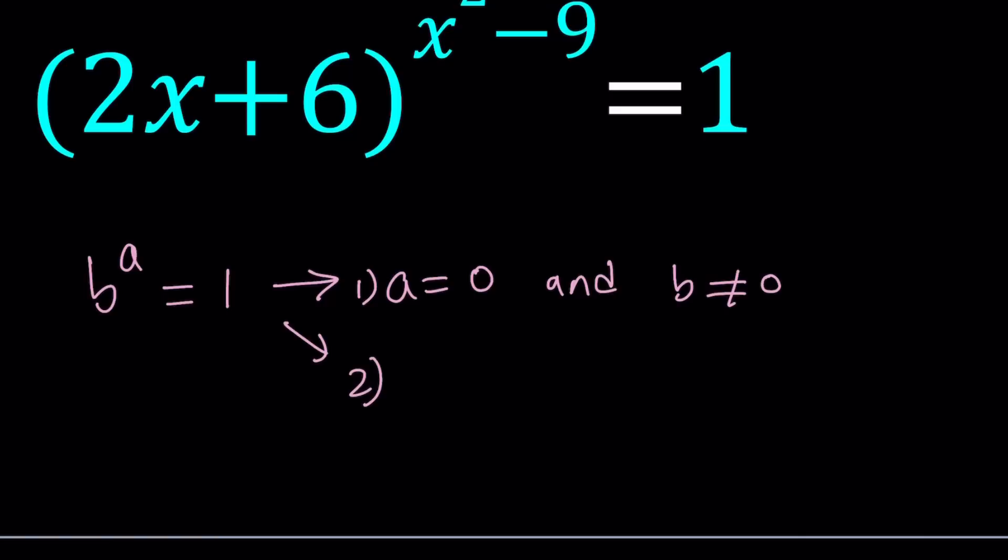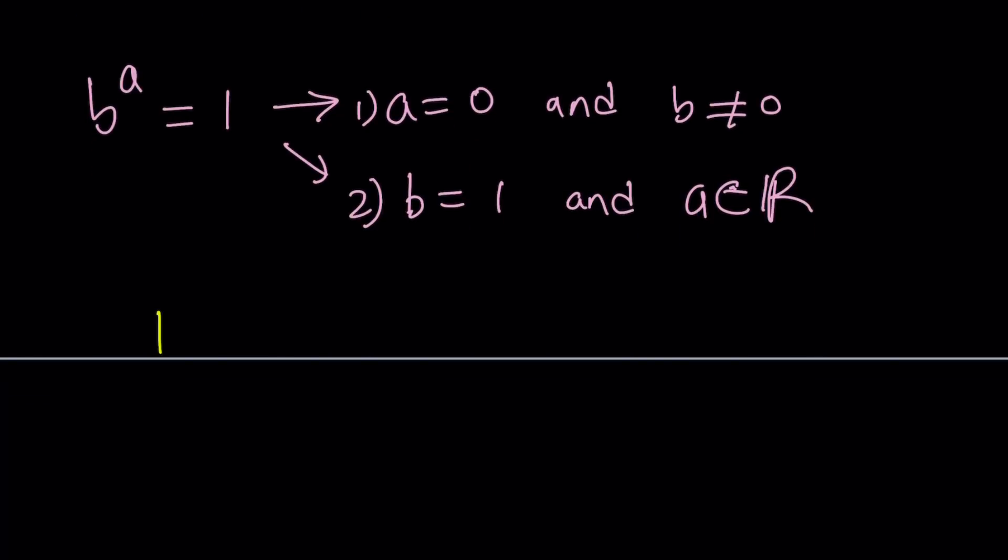Second case is kind of like the trivial case. b is equal to 1. So when the base is 1, no matter what the exponent is, it's always going to be 1. But of course, we're talking about real numbers again, not complex numbers in this sense. So we can say b equals 1 and a is just a real number. Now, I had to emphasize that a and b are real numbers here. Because if that's not the case, then it kind of takes us back to one of the previous problems that we did.